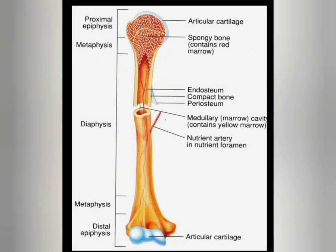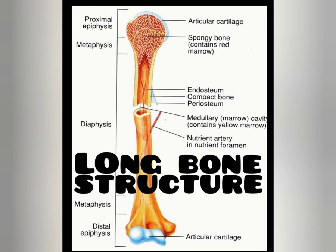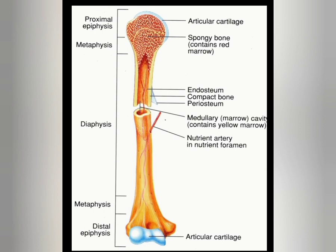A long bone has a diaphysis or shaft and two epiphyses or extremities. The diaphysis is composed of compact bone with a central medullary canal containing fatty yellow bone marrow. The epiphysis consists of an outer covering of compact bone with spongy bone inside. The diaphysis and epiphysis are separated by epiphyseal cartilages, which ossify when growth is complete.